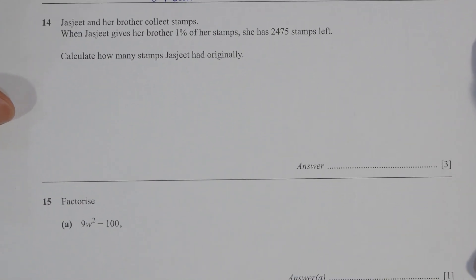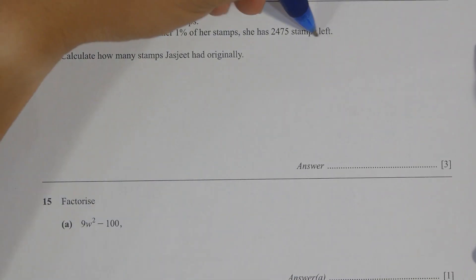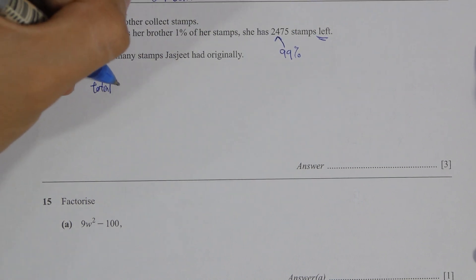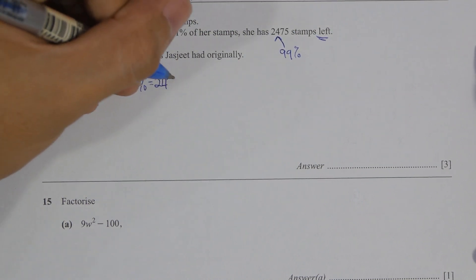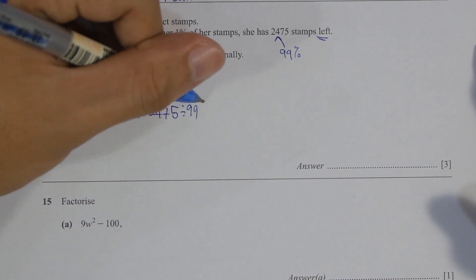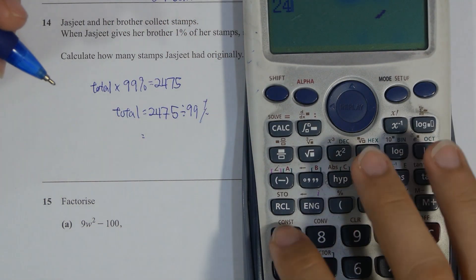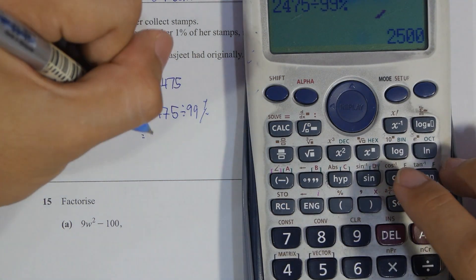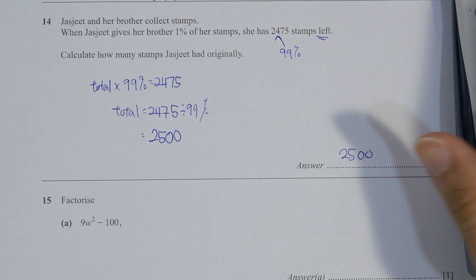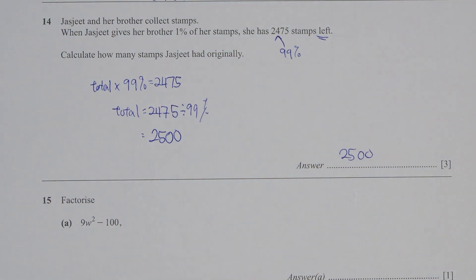For question 14, Jude collected stamps, gave 1% of her stamps, and she has 2,475 left. So this 2,475 is actually the 99%. So simply take 2,475 divided by 99%, then you will get the results as 2,500 stamps.